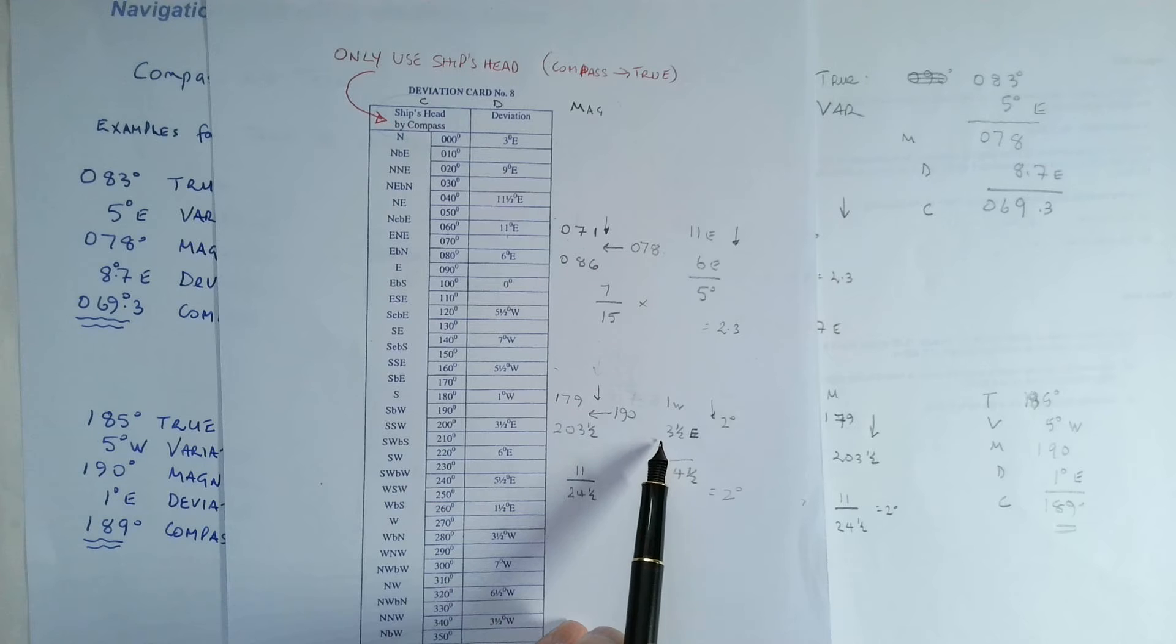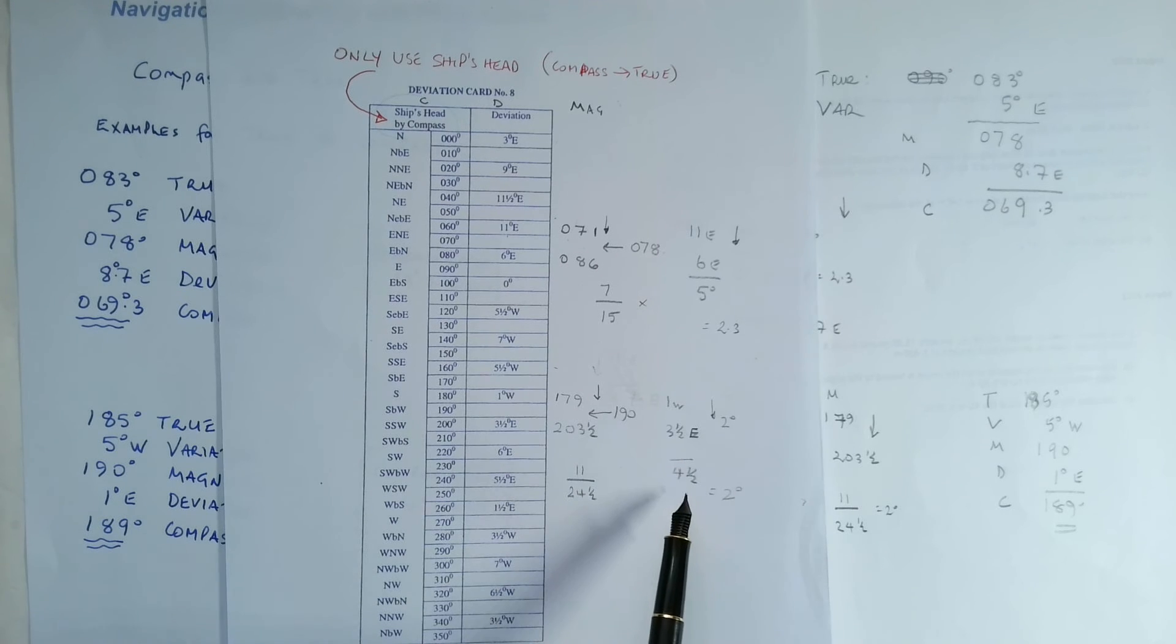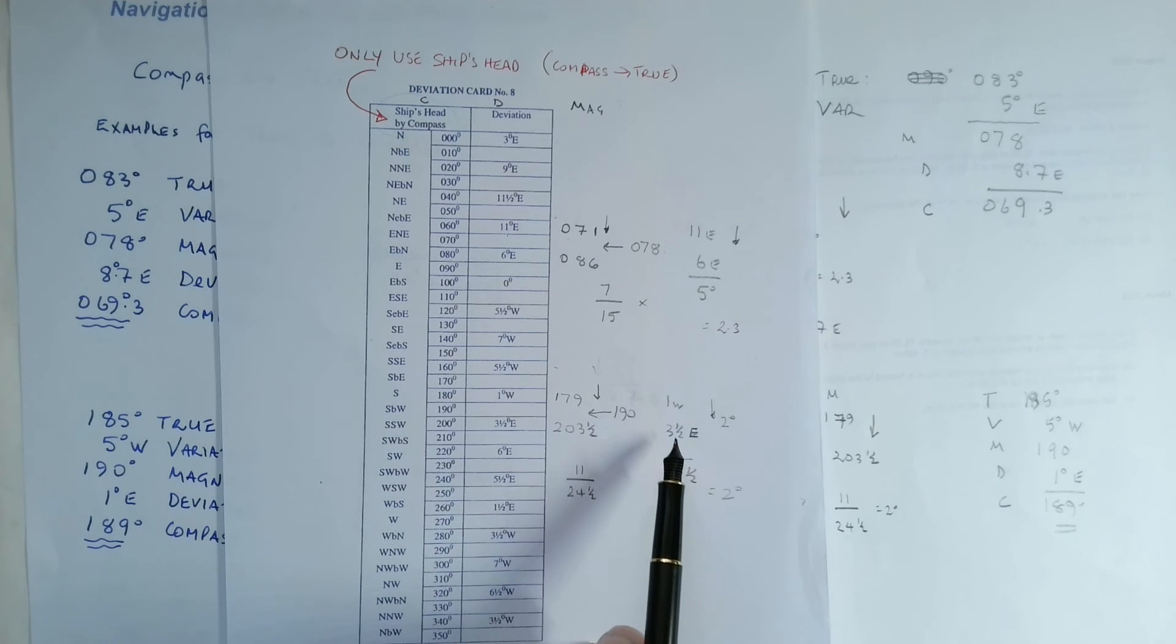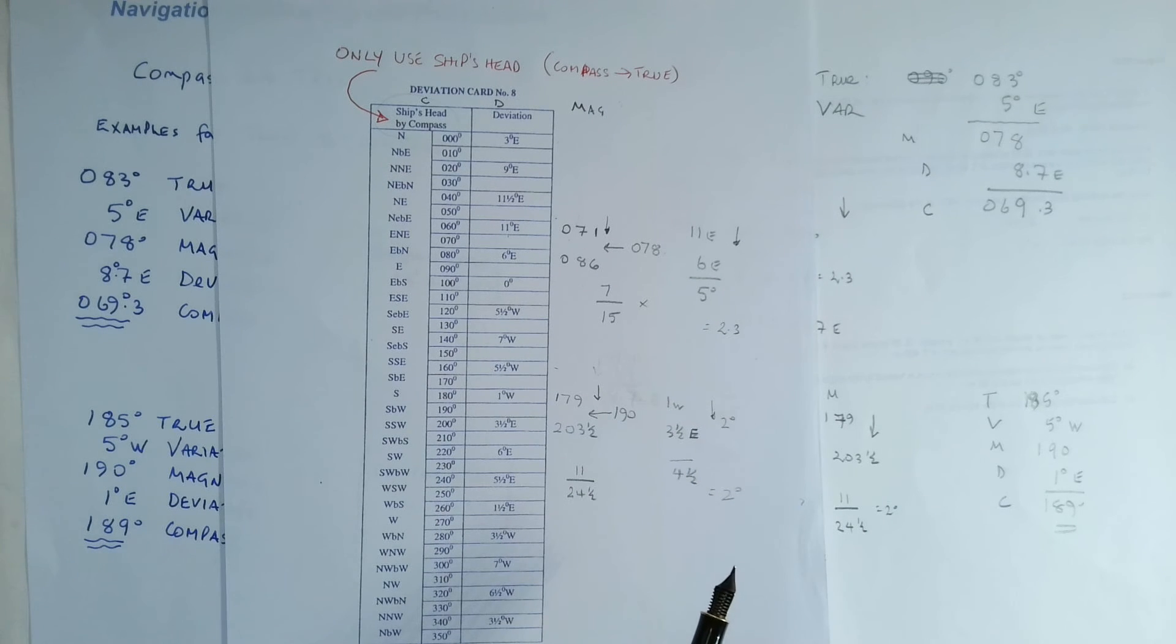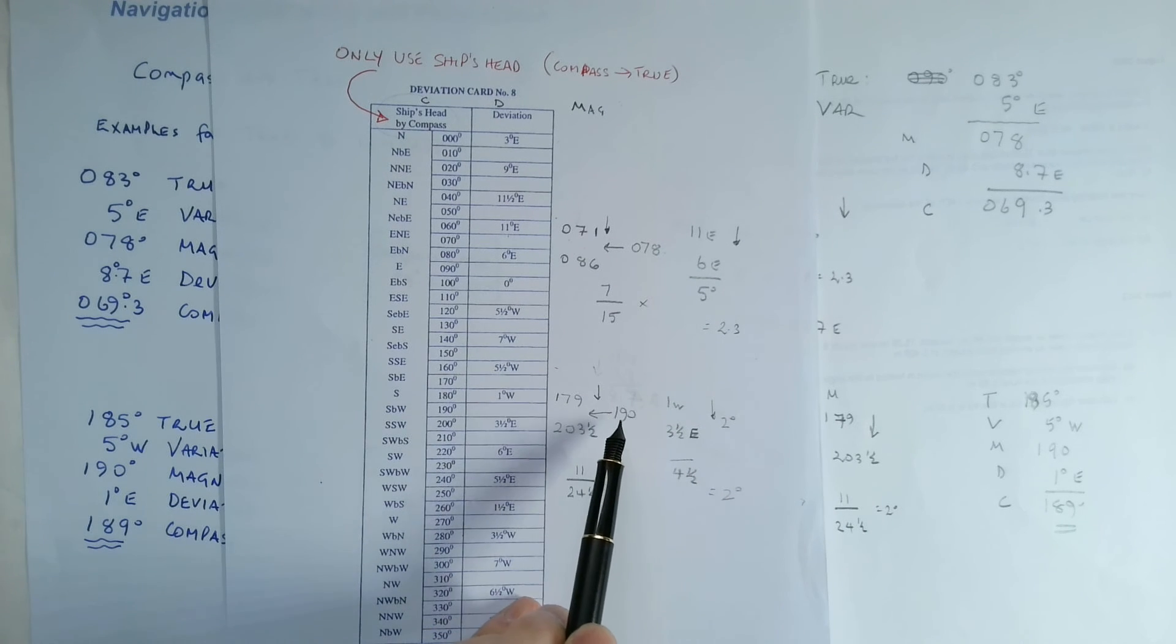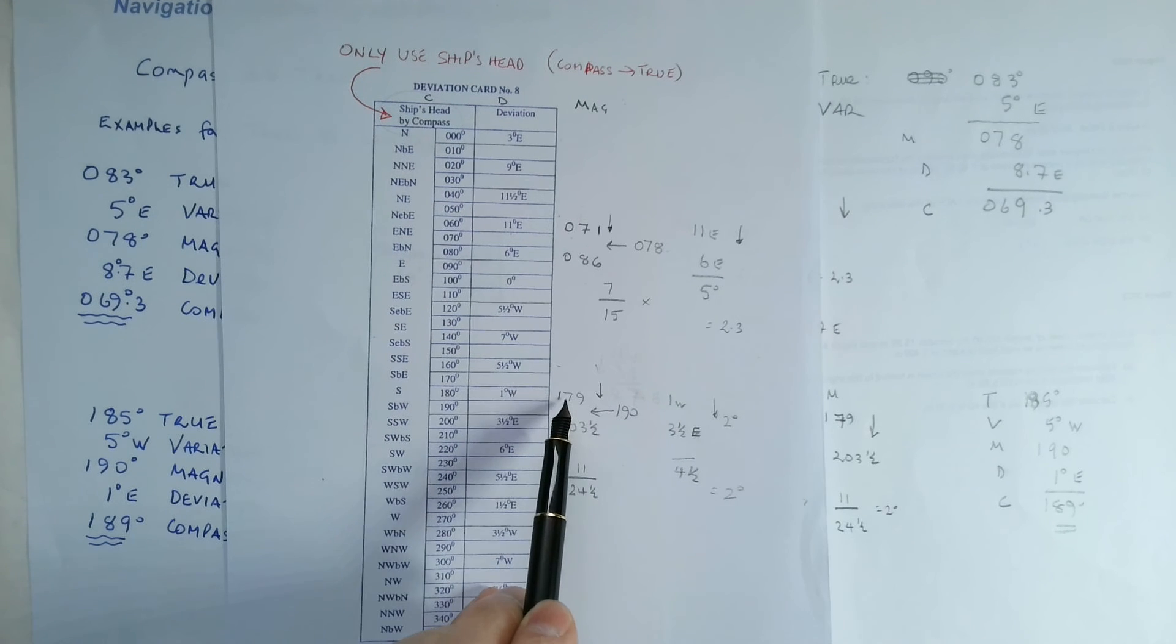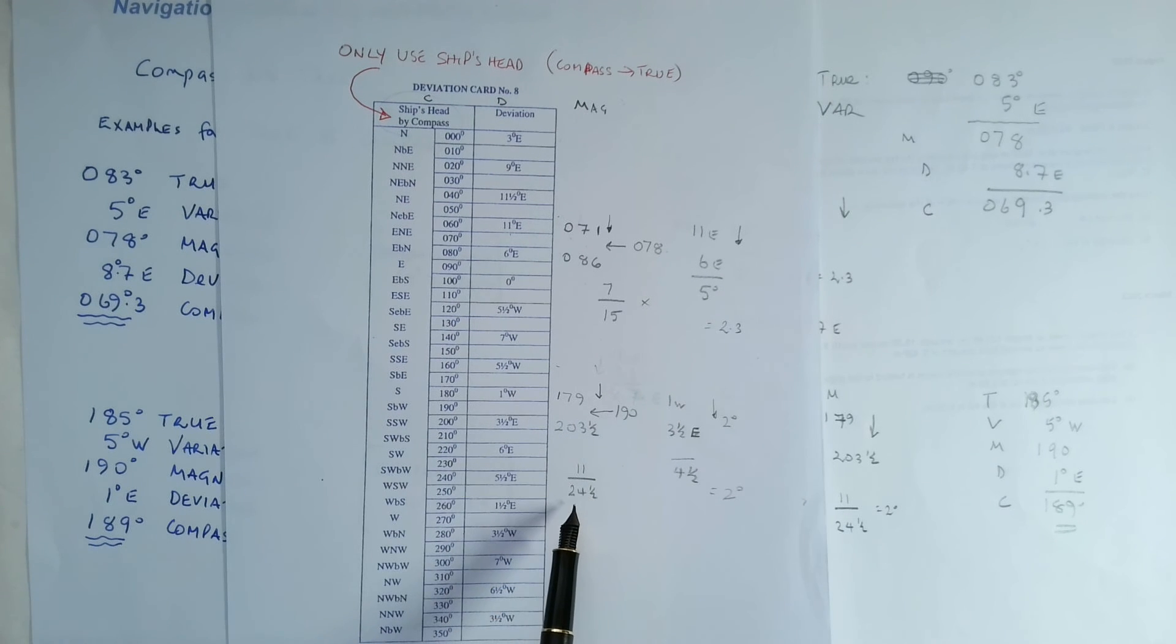Now when you have 1 west and 3.5 east, of course the total is 4.5 degrees. So here we subtracted, but here we add because they're named differently. So 179 to 190 is 11, 179 to 203.5 is 24.5, multiplied by 4.5 gives us 2.